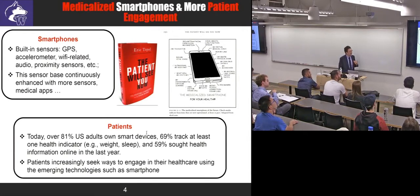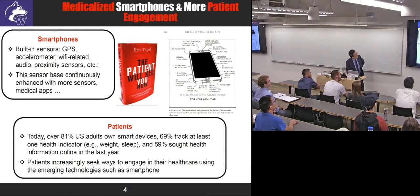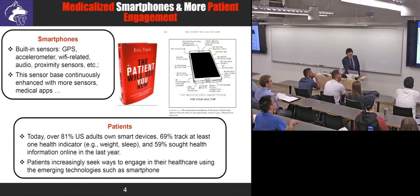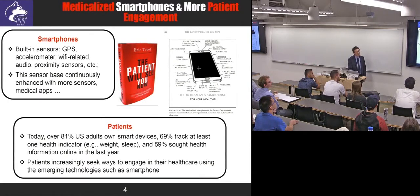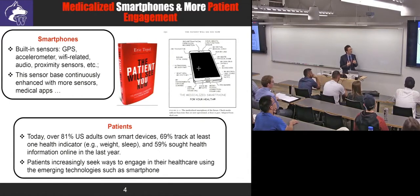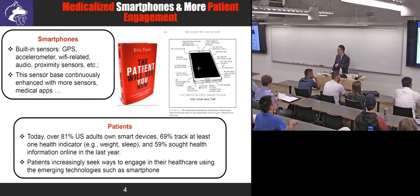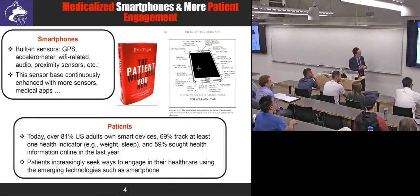Smartphones are becoming medicalized devices. A book on this concept mentions that smartphones not only communicate but can provide microprocessor and display functions — and nowadays people create all kinds of devices which can be attached to smartphones. The smartphone itself has many sensors: GPS, accelerometers, Wi-Fi connection. When you walk into a room you connect with Wi-Fi and it tells you a lot about movement. We can also collect messages, phone calls, and audio signals — all kinds of signals can be collected continuously.